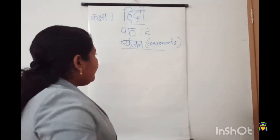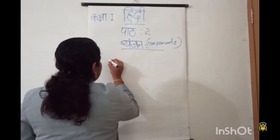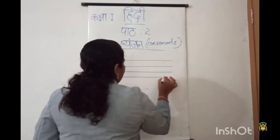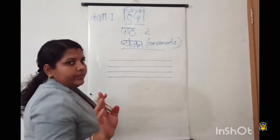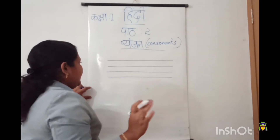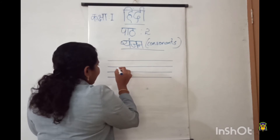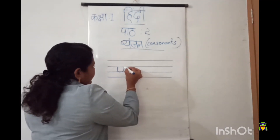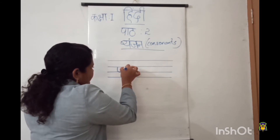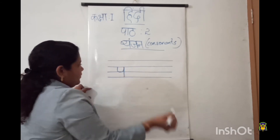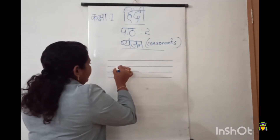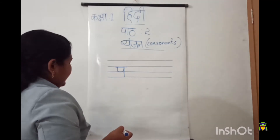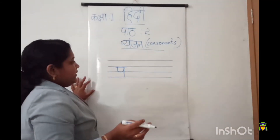So children, how many lines are in your notebook? Yes, four lines. So let me draw the lines first. One, two, three, four. Okay, all of you listen carefully. Keep your pencil on the second line. In between the second line and third line we will draw a curve like this. Then from here we will draw a standing line from second line to fourth line.